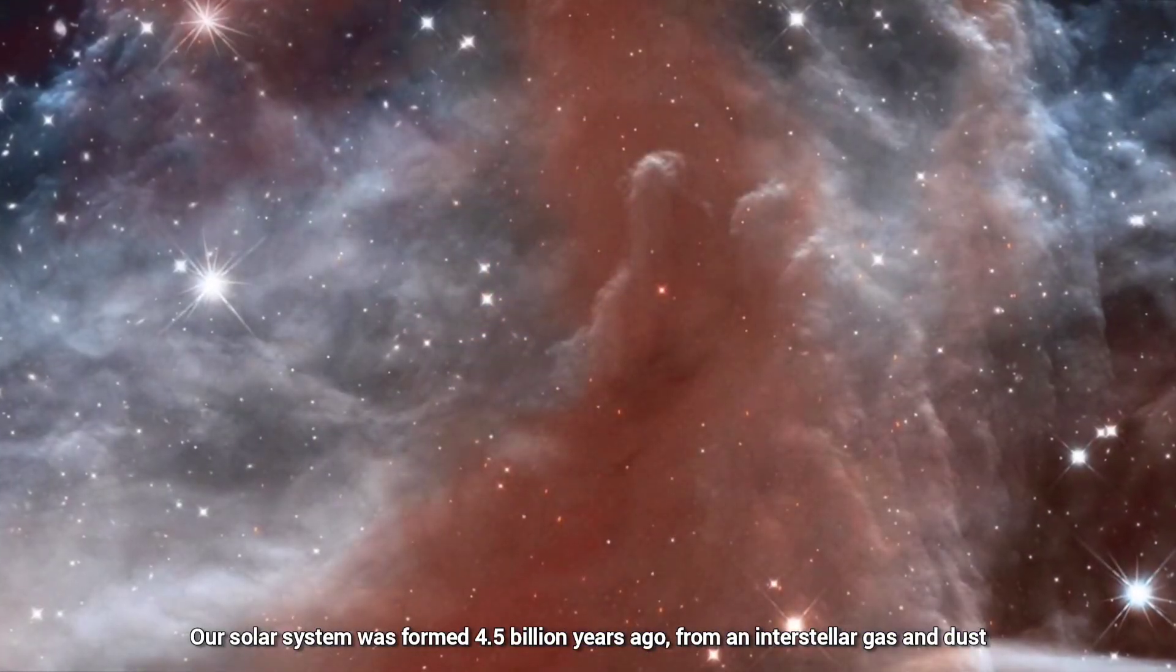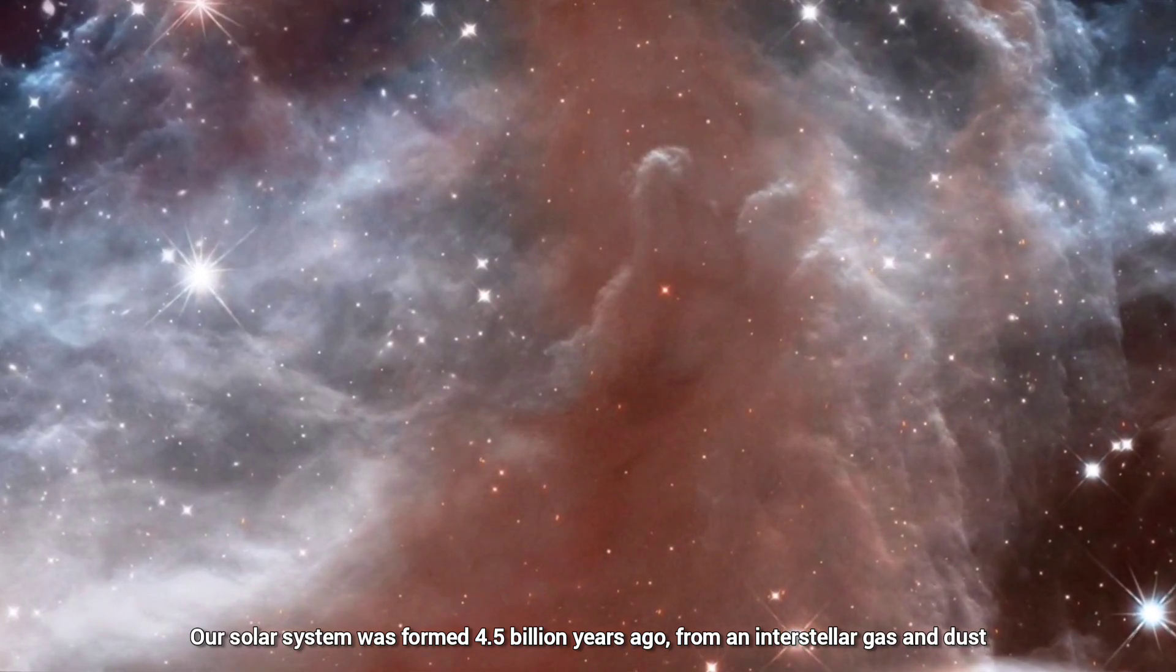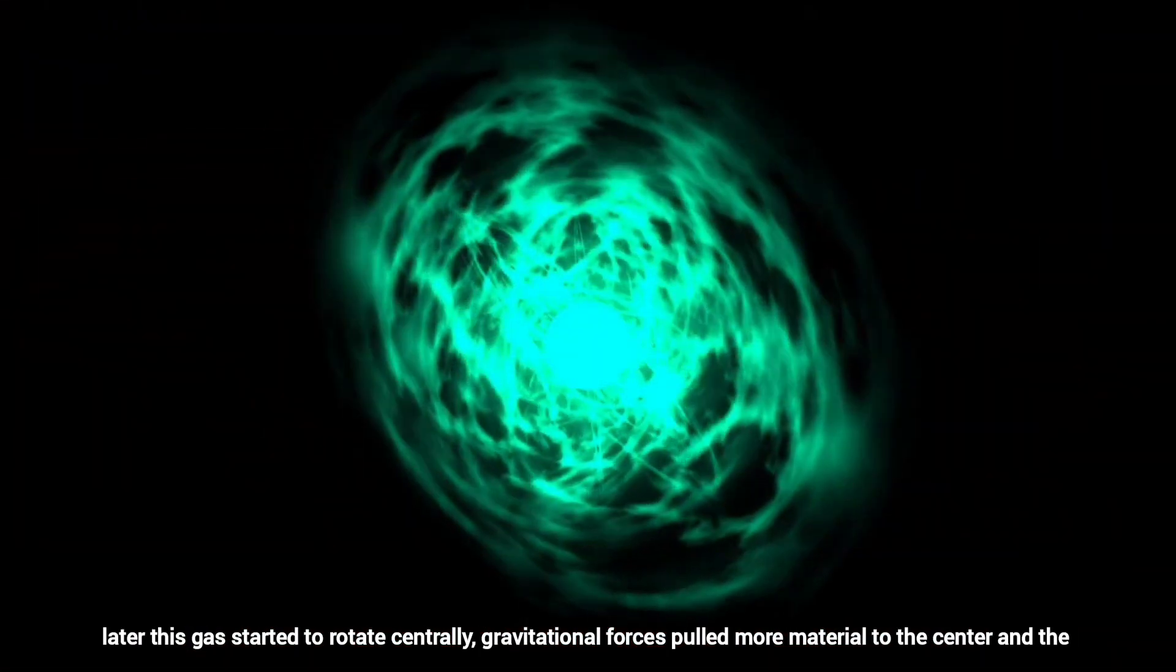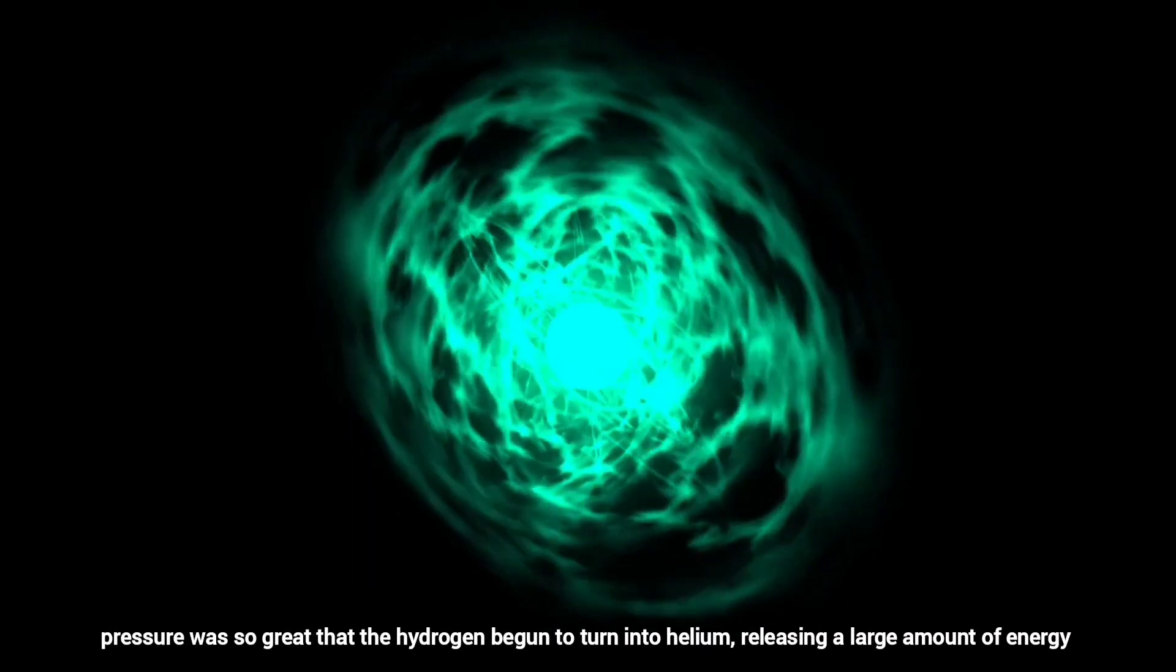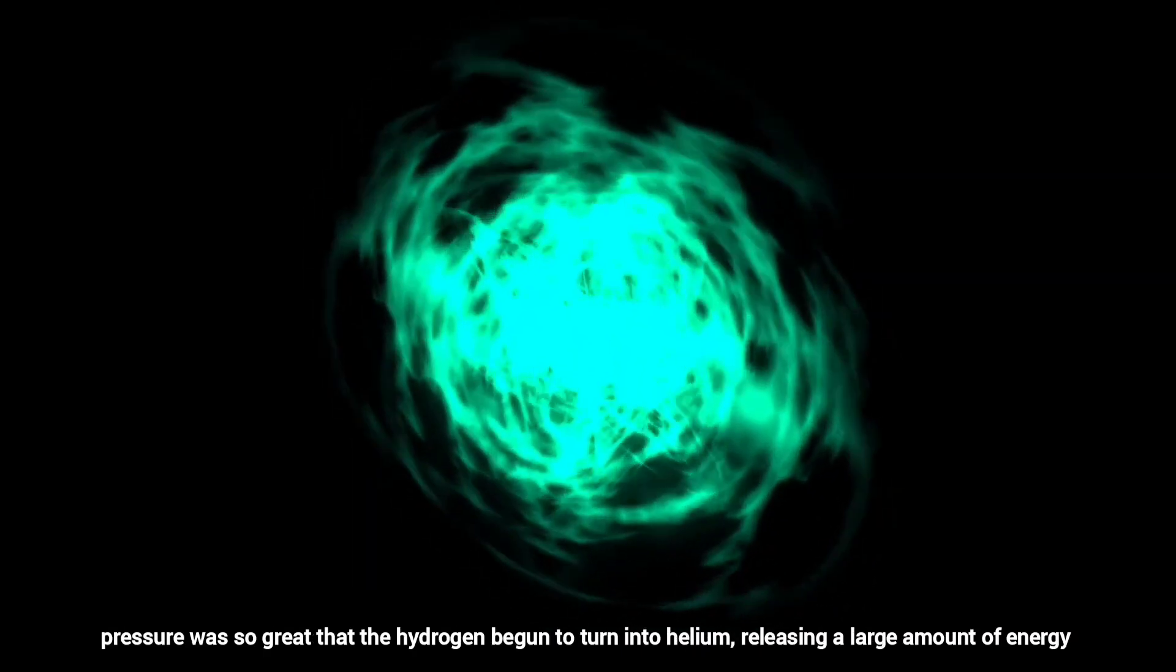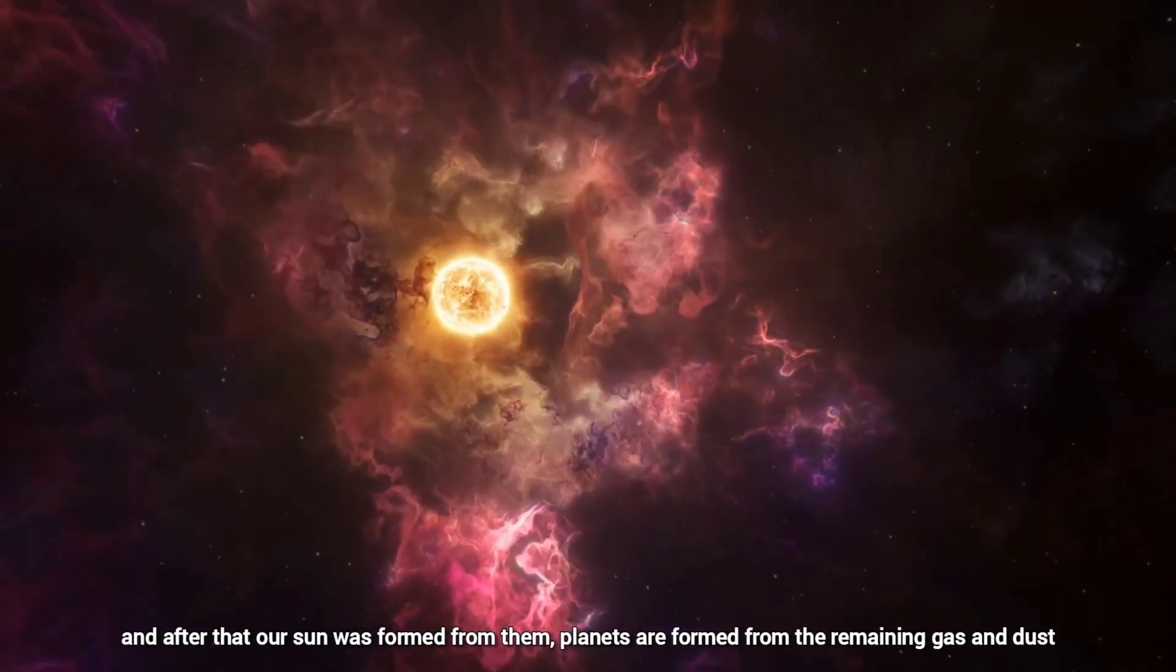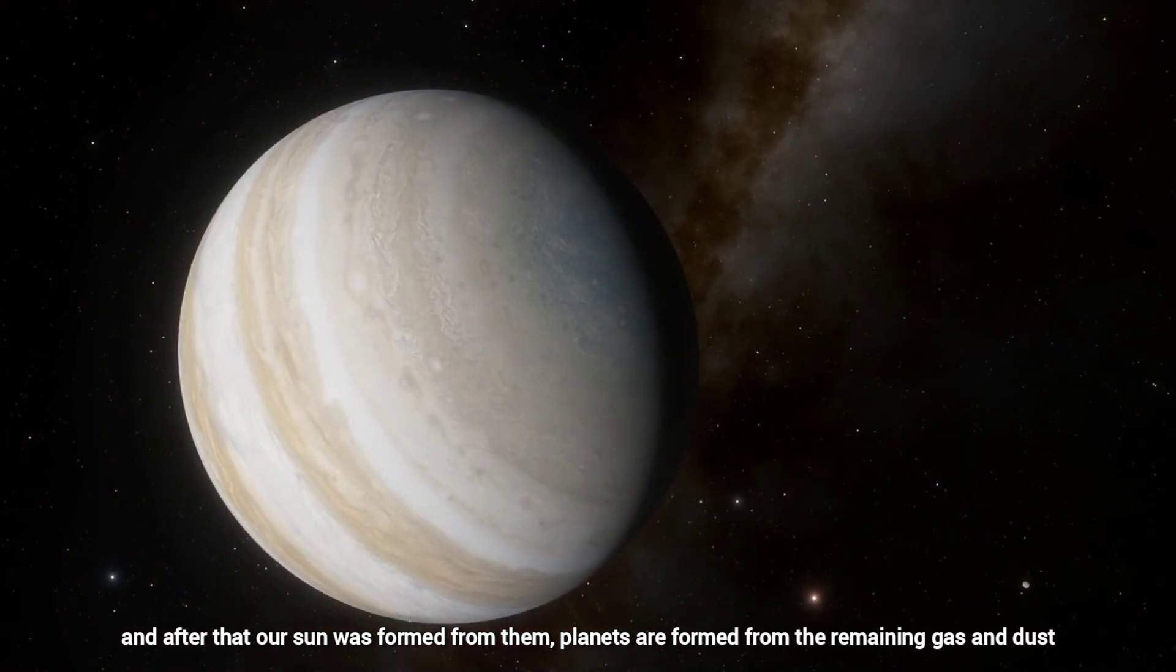Our solar system was formed 4.5 billion years ago from interstellar gas and dust. Later, this gas started to rotate centrally. Gravitational forces pulled more material to the center and the pressure was so great that the hydrogen began to turn into helium, releasing a large amount of energy. And after that, our Sun was formed. Planets are formed from the remaining gas and dust left behind.